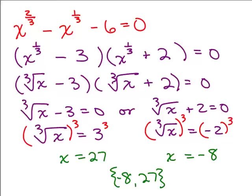It's up to you — some people prefer to always substitute for u, and some people never want to. You have to do it whichever way is easiest for you. You've got options, and that's one of the cool things about math: there usually isn't just one way, there are multiple ways to solve a problem with rational exponents.